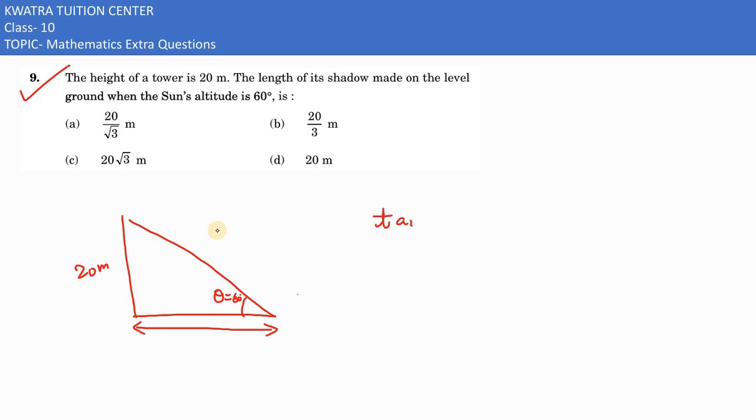So what formula can we use in this case? Tan, as it involves the ratio, that is perpendicular over base. So here in this case, tan theta would be tan 60 degrees.